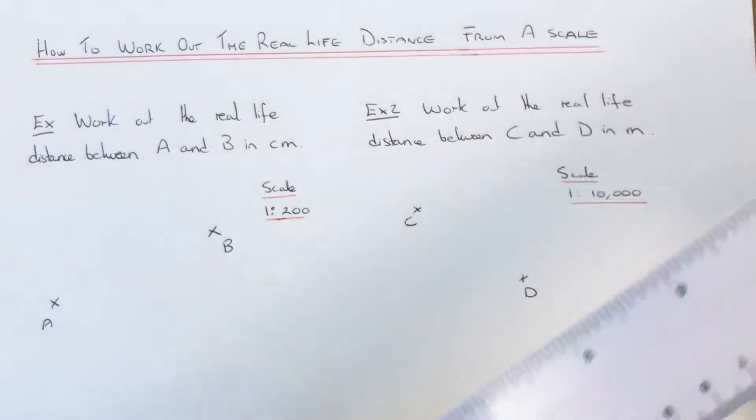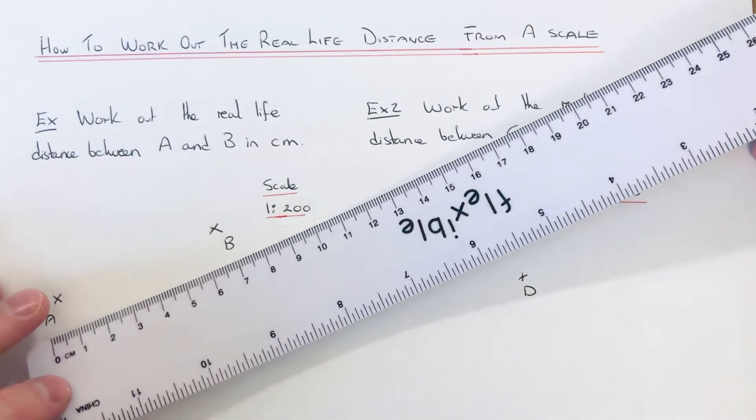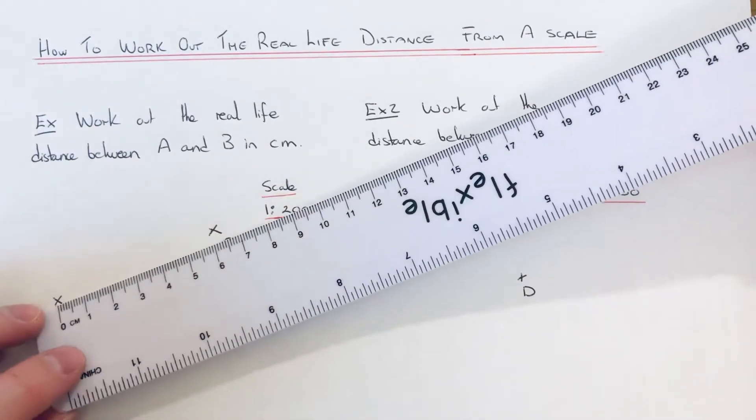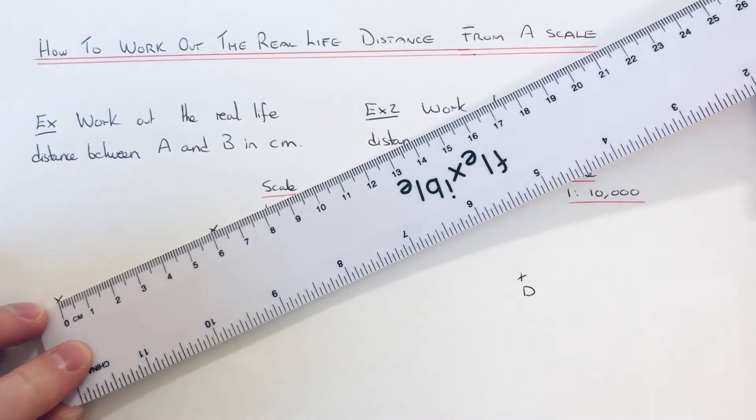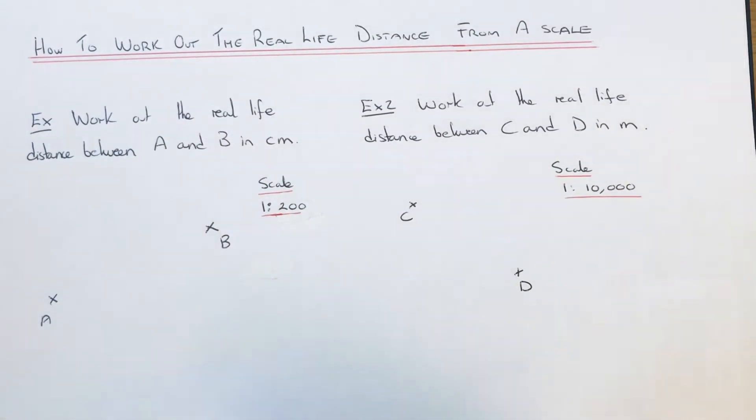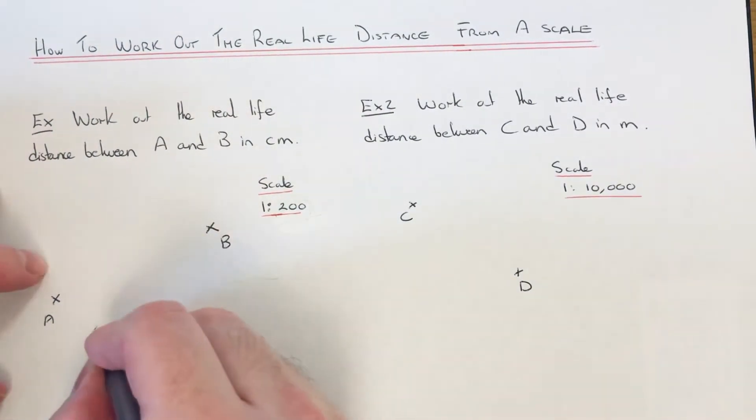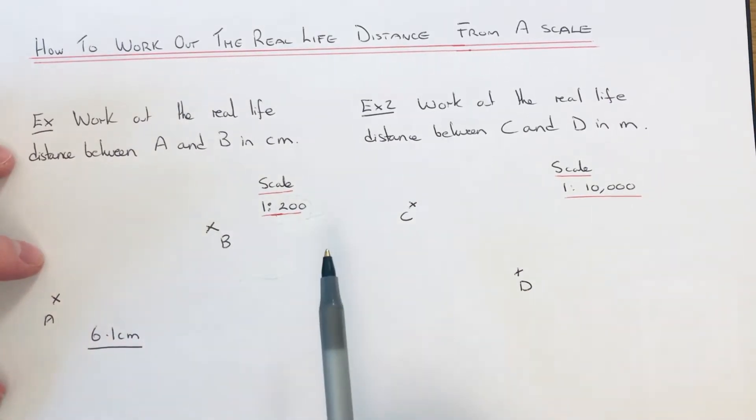The first thing we need to do is work out the distance on our map. I'm going to choose to measure the distance in centimeters, so the distance between A and B is 6.1 centimeters.